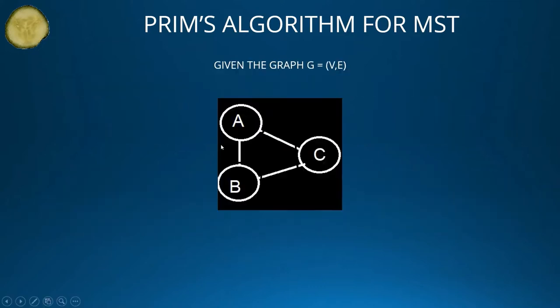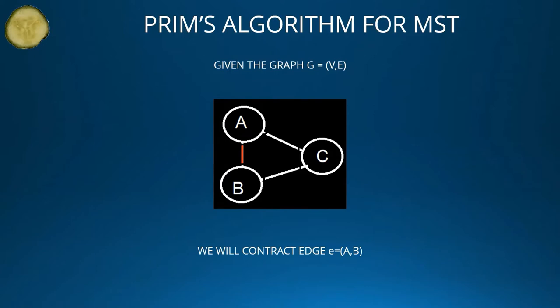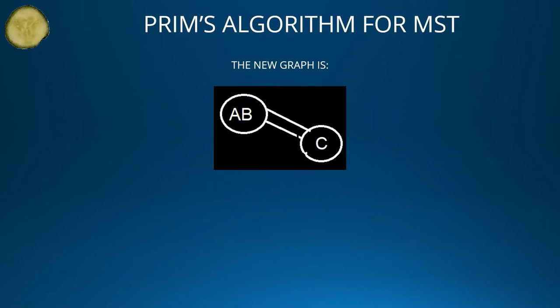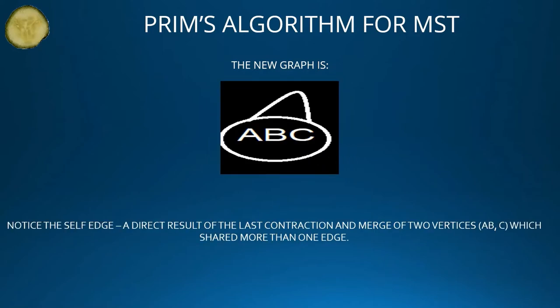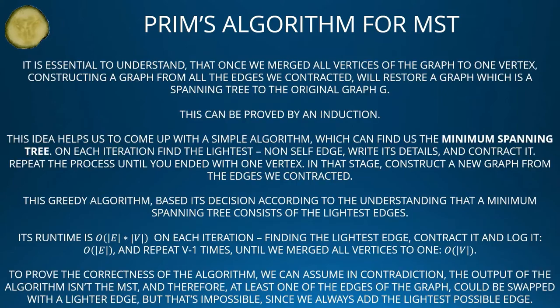Let's see an example. Given graph G = (V, E), we will contract edge E = AB. The new graph is AB and C, with two edges connecting them. We will then contract one of the edges, E = ABC, and the new graph is ABC. Notice the self-edge is a direct result of the last contraction, where merging two vertices AB and C shared more than one edge. Once we merge all vertices of the graph to one vertex, constructing a graph from all the contracted edges restores a spanning tree to the original graph G. This can be proved by induction.